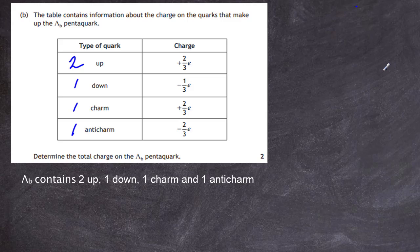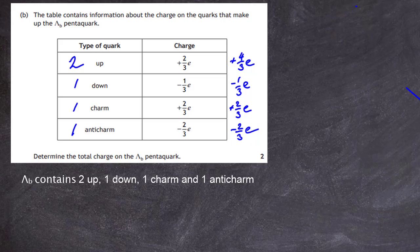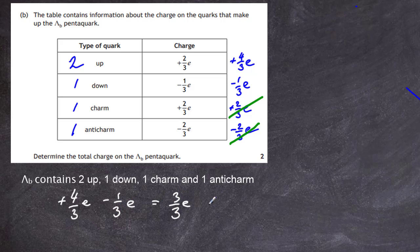In terms of charges: two up quarks give us plus four-thirds e. One down gives us minus one-third e. One charm gives us plus two-thirds e, and one anti-charm gives us minus two-thirds e. The plus two-thirds from the charm cancels with the anti-charm, leaving nothing. We're left with four-thirds e minus one-third e, which gives us three-thirds e, equal to plus e. So the total charge on the lambda b pentaquark is plus e.